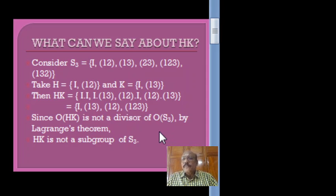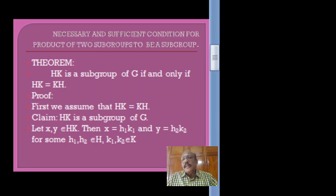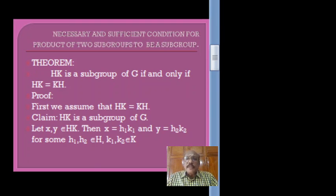We observe there are four distinct elements in HK, and 4 is not a divisor of 6 — the number of elements in S3. If HK were a subgroup, then by Lagrange's theorem the order of HK must be a divisor of the order of S3, so 4 must divide 6, which is not possible. Therefore HK is not a subgroup of S3. The conclusion is: the product of two subgroups need not be a subgroup. The general question is: under what conditions on H and K is HK a subgroup of G?